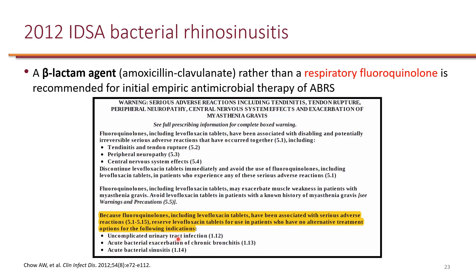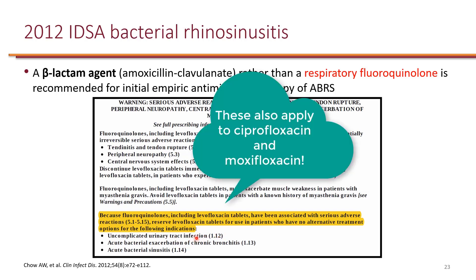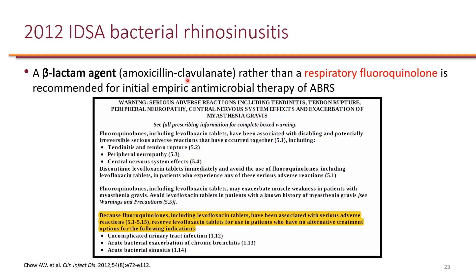This applies to indications such as urinary tract infections — if someone with an uncomplicated UTI has other options, they should receive those instead. Only use fluoroquinolones if there are no other options. The same is true with bacterial sinusitis: if someone can tolerate amoxicillin-clavulanate, then they should receive that instead of levofloxacin.